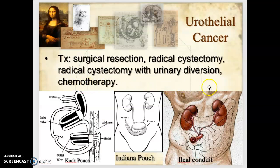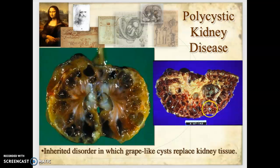Treatment for urothelial cancer includes surgical resection of the tumor. In some cases, a cystectomy is performed to remove the bladder entirely, and the surgeon constructs a new bladder from a section of bowel — a continent pouch. The patient can then catheterize this reservoir every three to four hours to drain it, a process called urinary diversion.